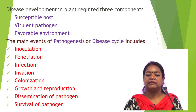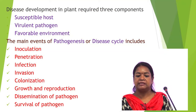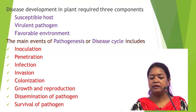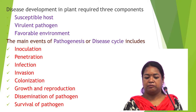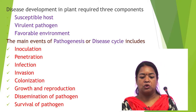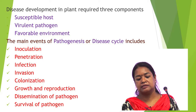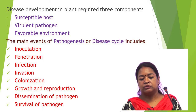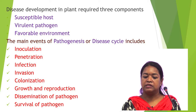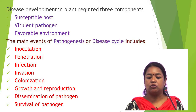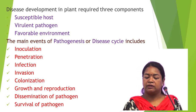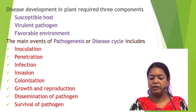The development of disease in a plant requires three major components. The first major component is the host, which must be susceptible. The second important component is the pathogen, which must be virulent or aggressive in nature. The third factor is the environment, which must be favorable for the development of disease.